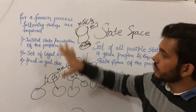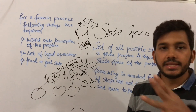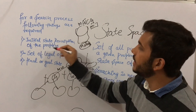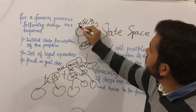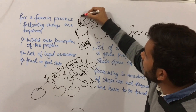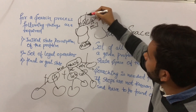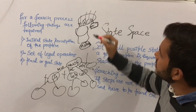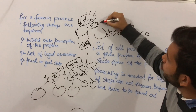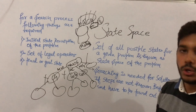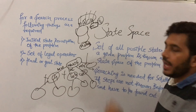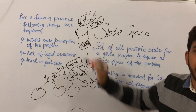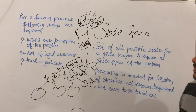For a searching process, three things are required. First, the initial state description of the problem. This was the initial state: there was a man, there was a wolf, there was a cabbage, there was a goat, and there is a boat, and only two are allowed to travel across the bank at a time. So this is the initial state of the problem.